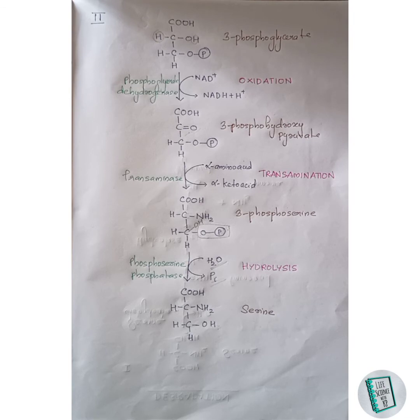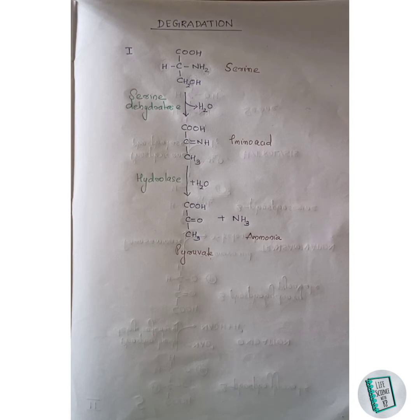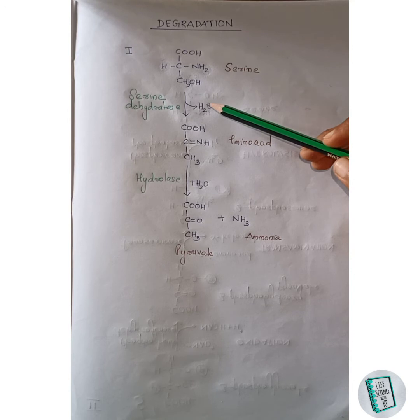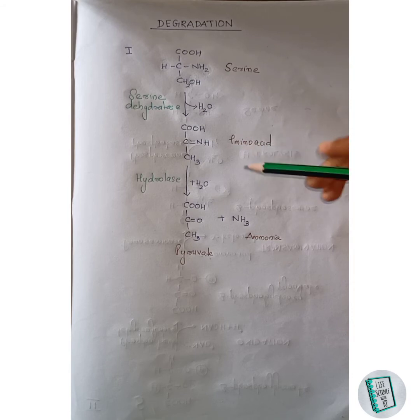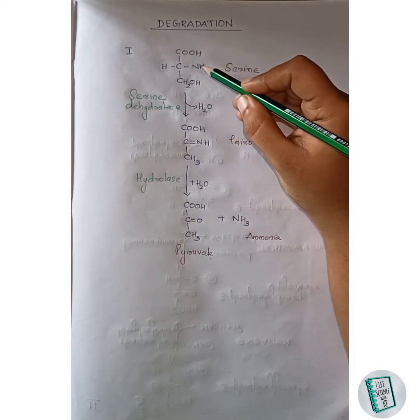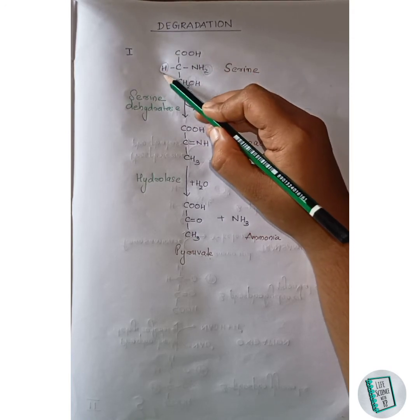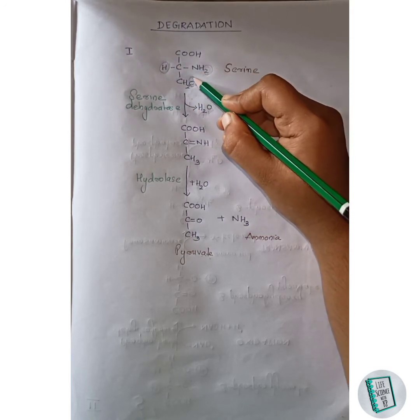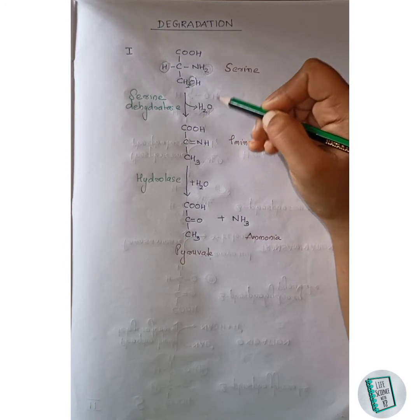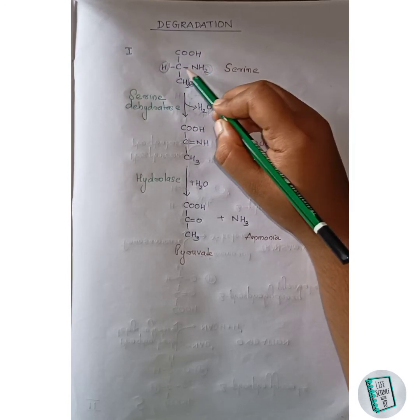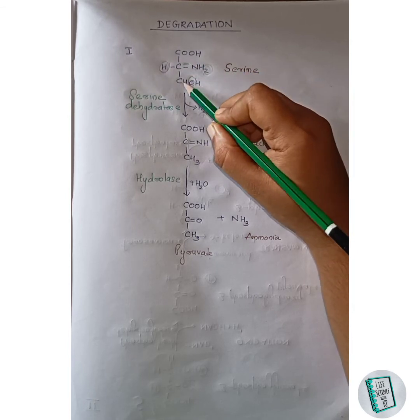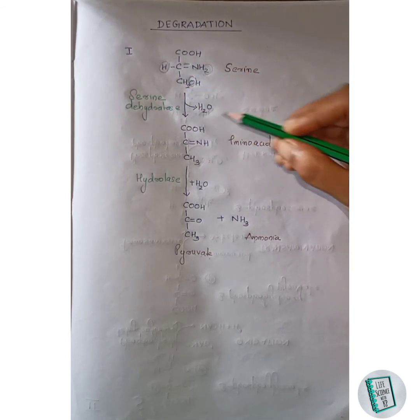Now let us move on to the degradation of serine. There are two pathways for the degradation of serine. In the first pathway, the end products are pyruvate and ammonia. In the first step, serine undergoes dehydration in the presence of serine dehydratase to form an amino acid. A water molecule leaves — one hydrogen from the NH2 and the oxygen of the CH2OH leave as water — then the NH group and this carbon form a double bond, and a hydrogen joins this carbon to form a CH3 group.